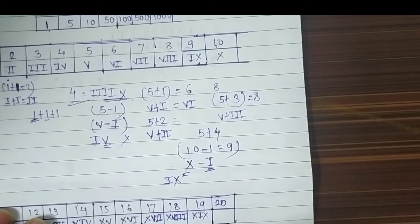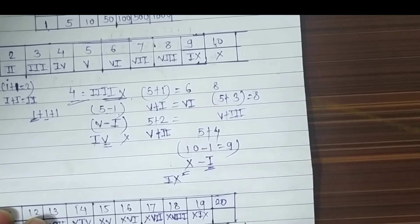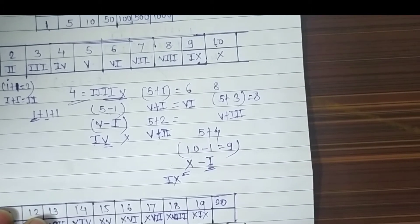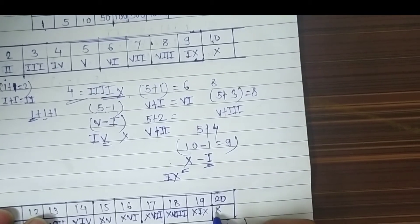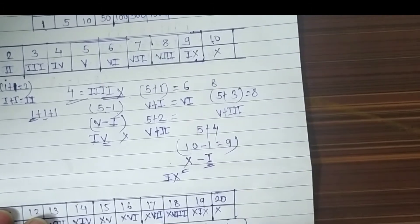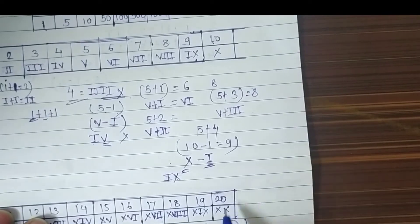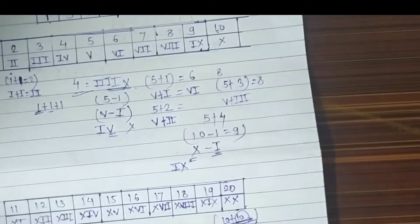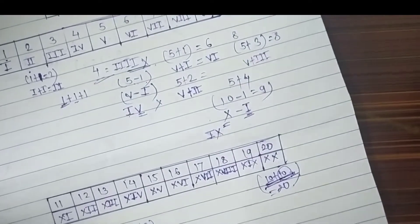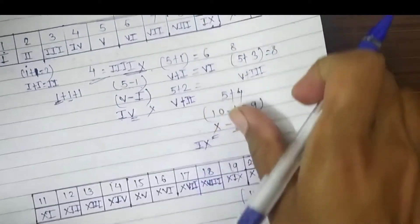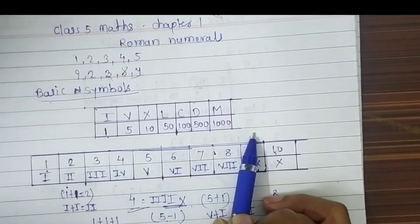For 18, it is X and VIII — XVIII. For 19, we use IX after X — XIX. For 20, we divide it as 10 plus 10 equals 20, so we write X twice — XX. It's easy to write symbols in Roman numerals, but you have to remember these seven basic symbols.